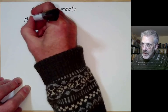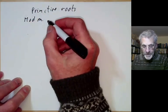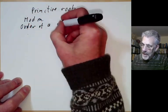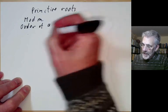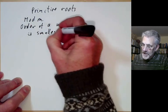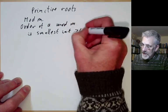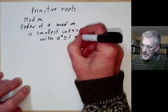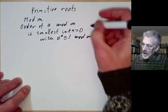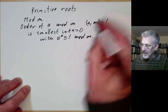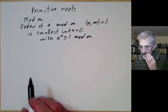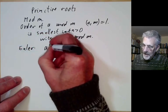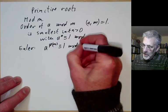We're going to work modulo m for some positive integer m. We recall that the order of a mod m is the smallest integer n greater than 0 such that a to the n is congruent to 1 modulo m. Here we take a to be coprime to m, otherwise there's no such integer. We also recall Euler's theorem, which says that a to the phi of m is congruent to 1 modulo m.